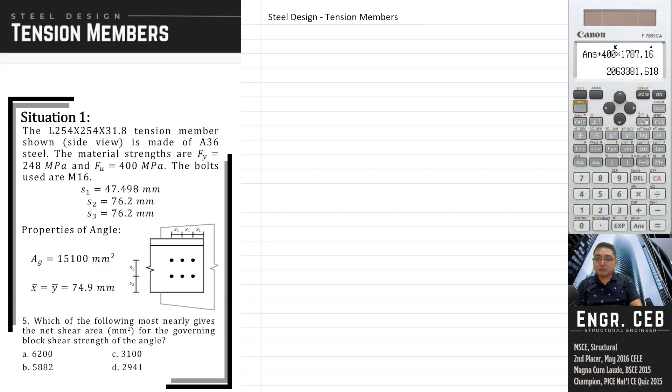We will repeat the process for case 2. For case 2, again, we will compare the lesser value between 0.6 FU ANV and 0.6 FY AGV.